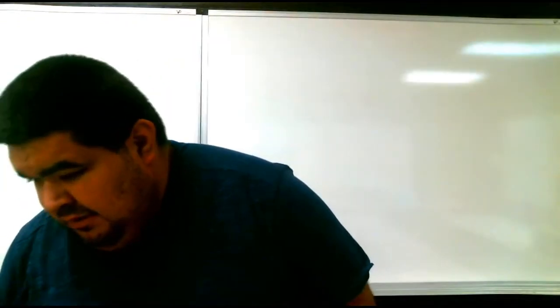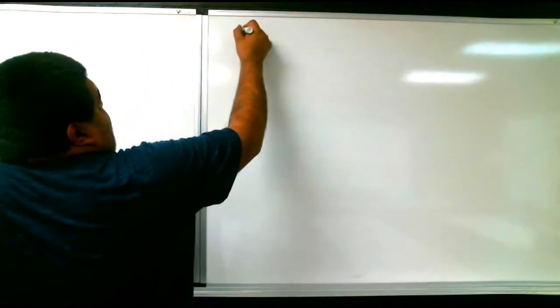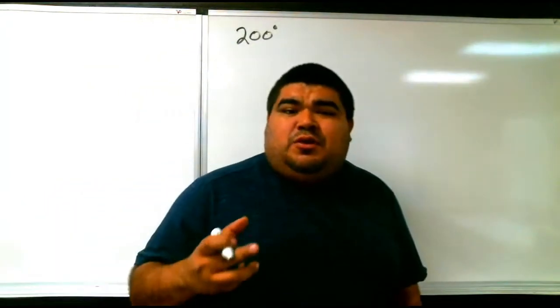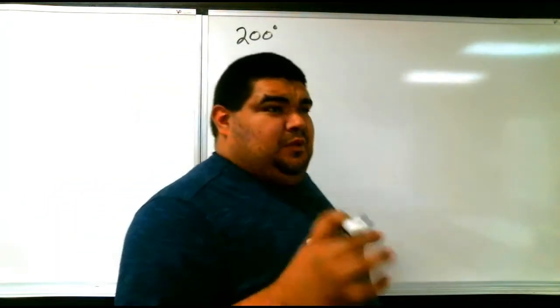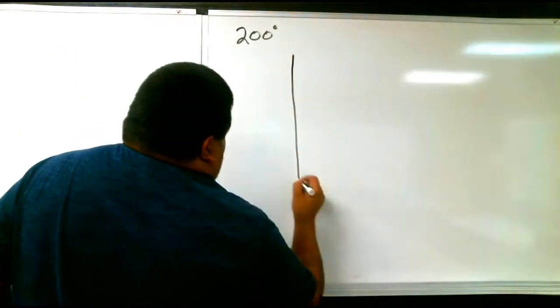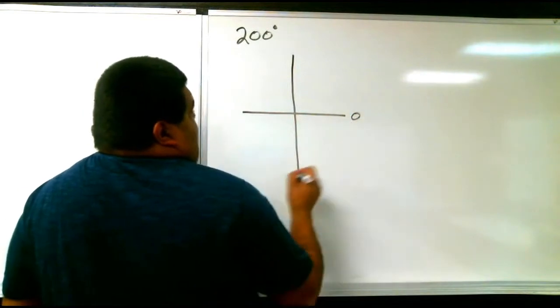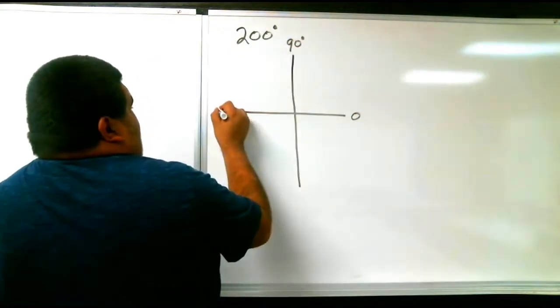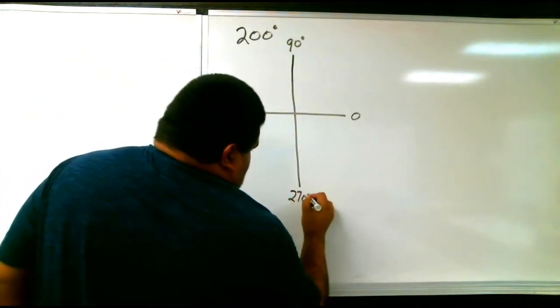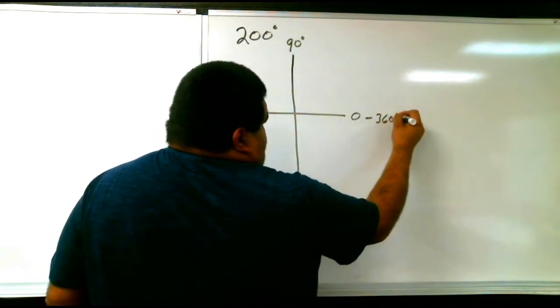So for example, if I were to say we're looking for 200 degrees, how would that look like? Well, it will look like something like this. We know that we have zero, we have 90 degrees, 180, 270, and obviously if you go all the way around, 360.